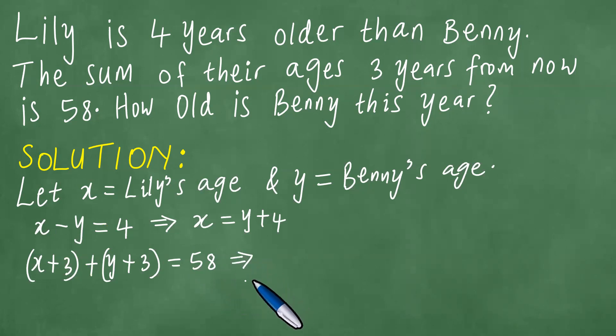What is the implication of this? It means x plus y is equal to, now three plus three is six, 58 minus six is exactly 52.